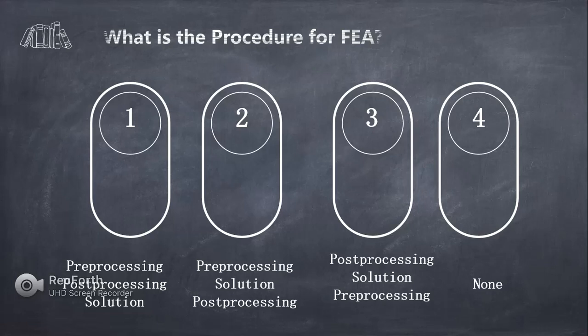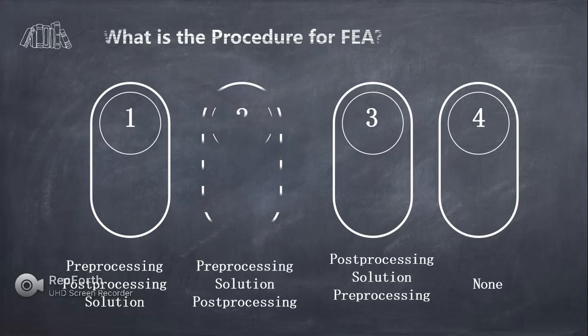The second question is: what is the procedure for FEA? The options are: pre-processing, post-processing, solution; or pre-processing, solution, post-processing; or post-processing, solution, pre-processing; or none. The correct procedure is pre-processing, then solution, then post-processing — the same applied in FEM software. So option 2 is the right answer.